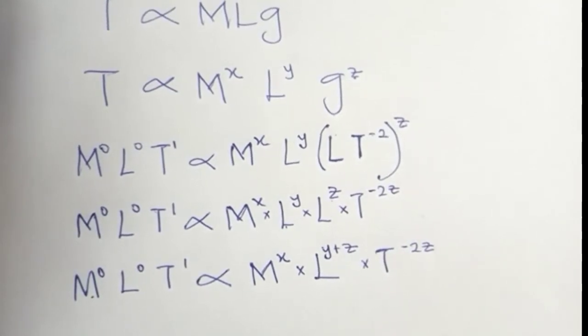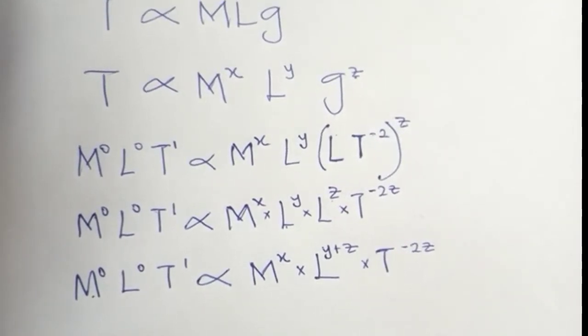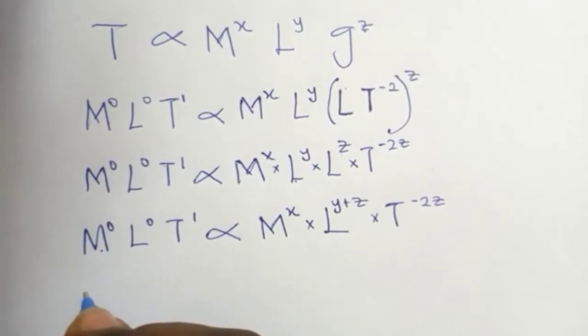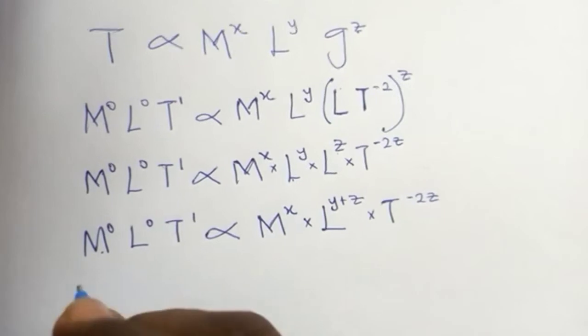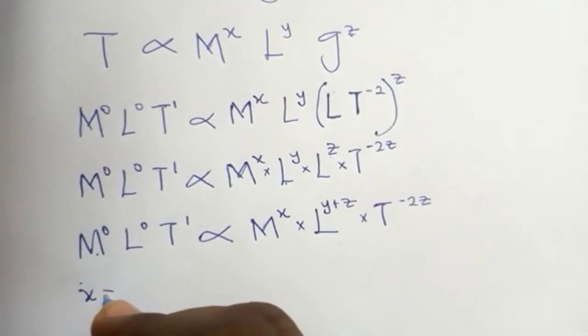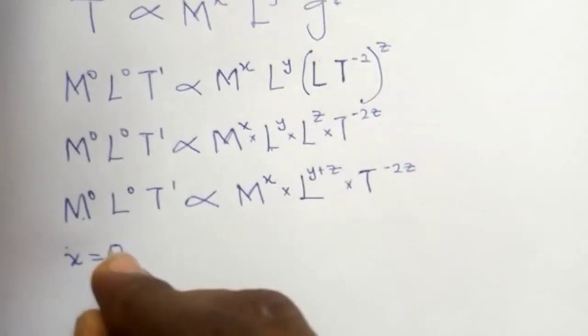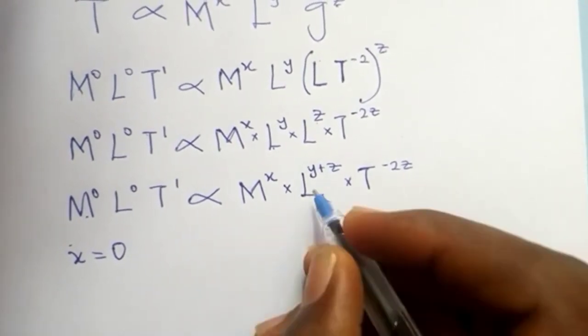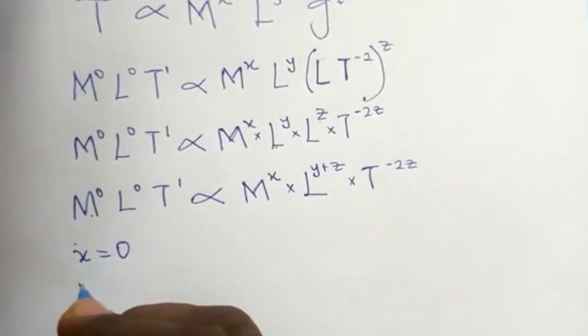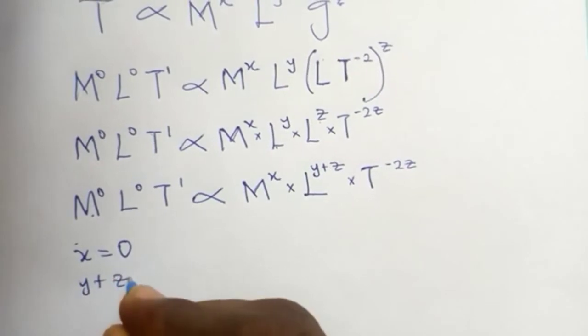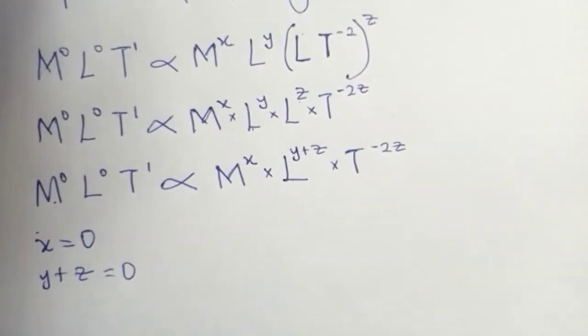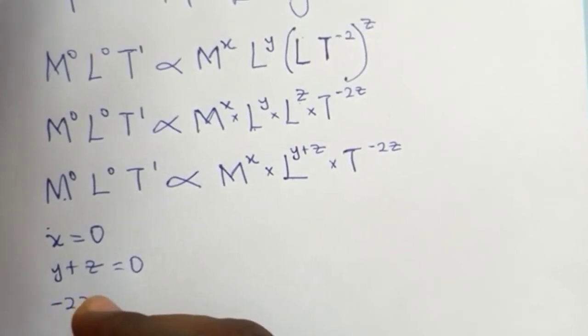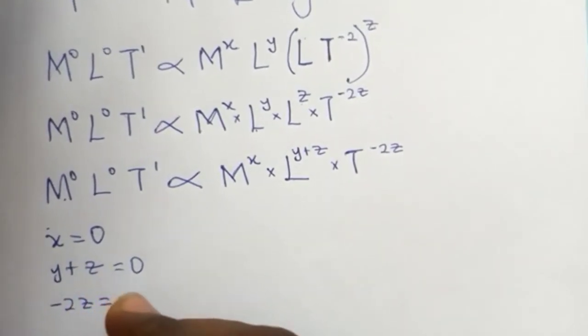When we equate the power, the power of M is 0, the power of M at the right hand side is x, so x equals 0. Let's move to L, it means we have y plus z equal to 0. Looking at T, we have minus 2z equal to 1.